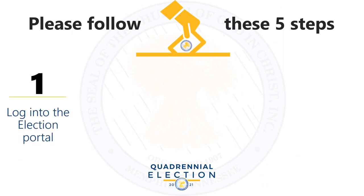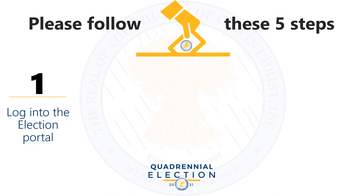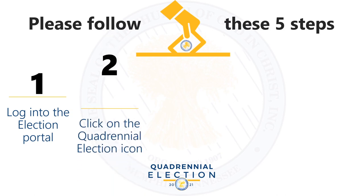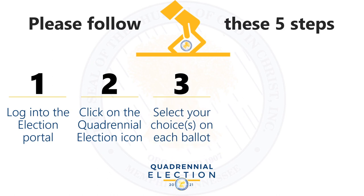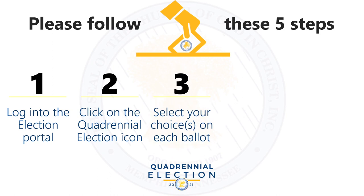Step one: log into the election portal when prompted by the General Assembly Chairman. Step two: click on the Quadrennial Election icon. Step three: select your choice on each ballot.